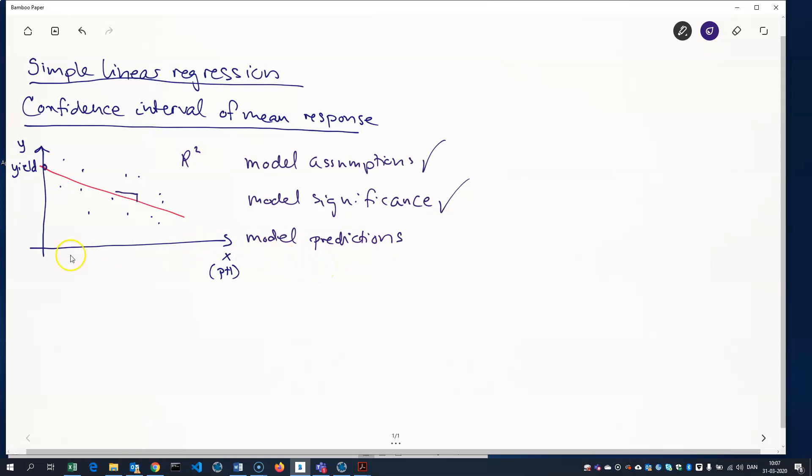And if we look at our pH example here, then we have pH 1 here, 2, 3, and 4, something like that. And we would like to know what would be the yield expected, what yield would we expect if we conduct our experiment at pH level 2.3.